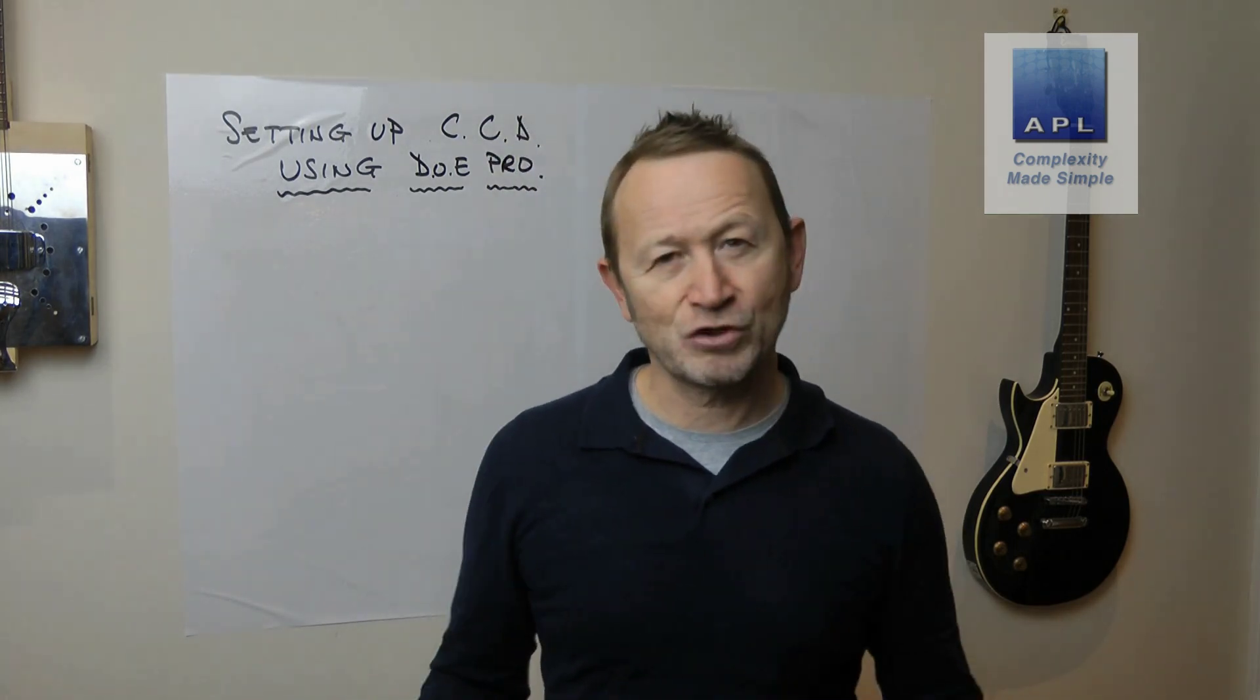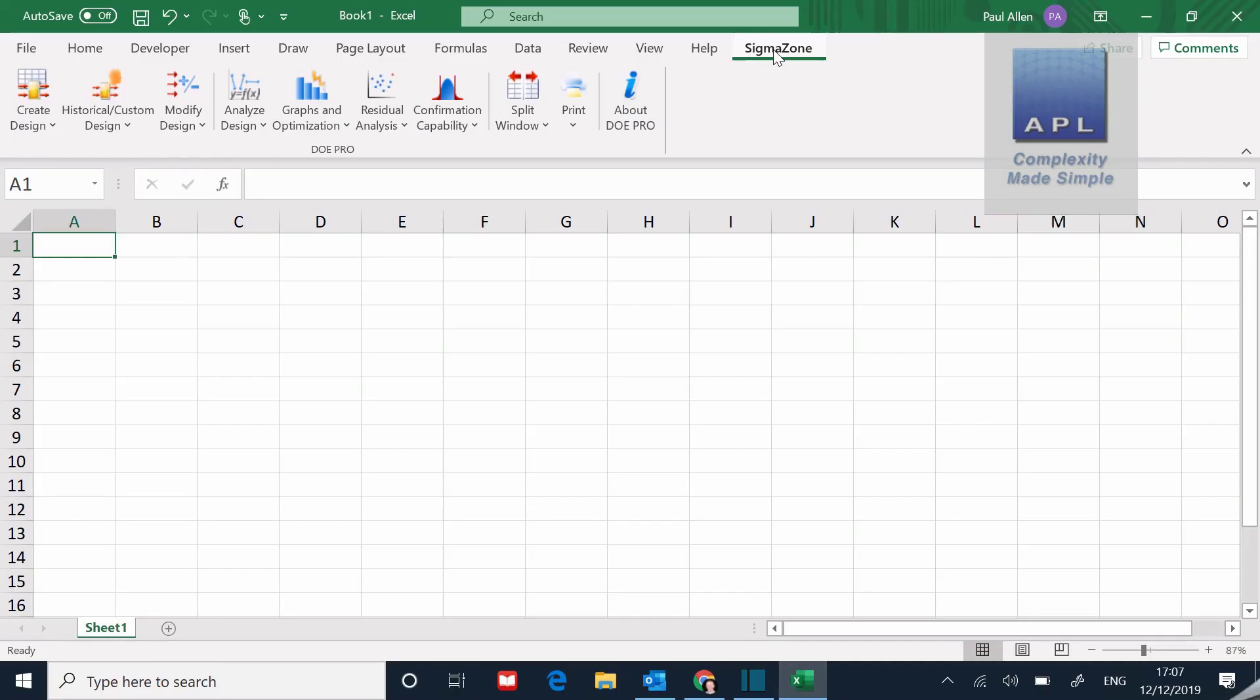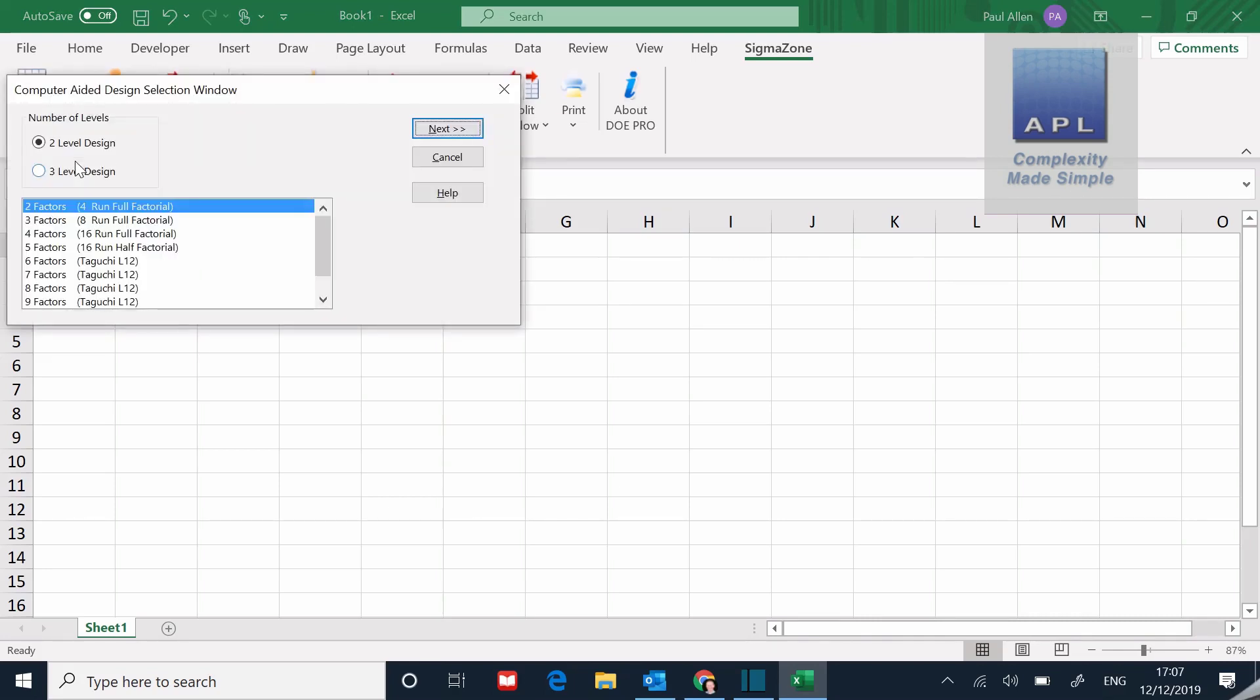Because there's a little bit of technicality in the central composite, it's worth just doing this as an extra tutorial. So we've got DOE Pro here, you can see I've got the software open. Like most of the setup, we're going to go to create design and we're going to click on the computer aided menu. That opens the window for us, and of course the window then says, well okay, what would you like to do - two level or three level?